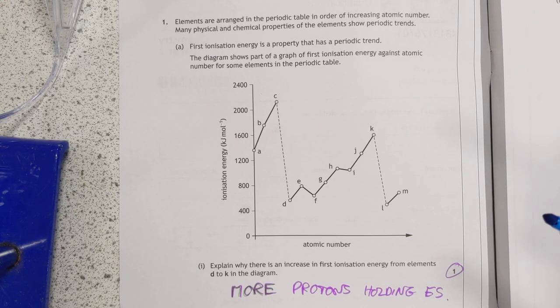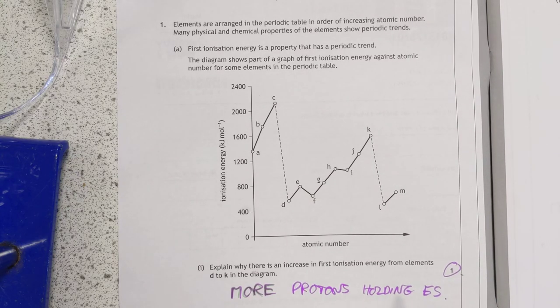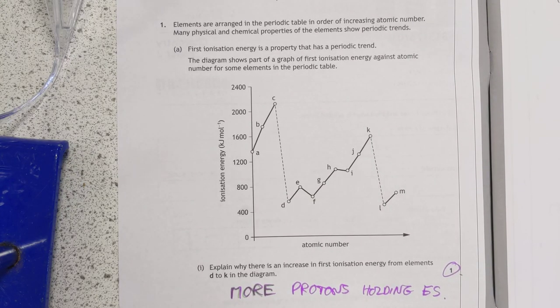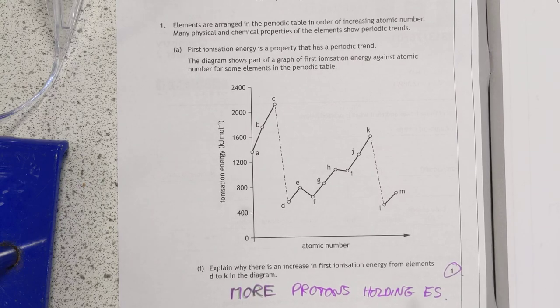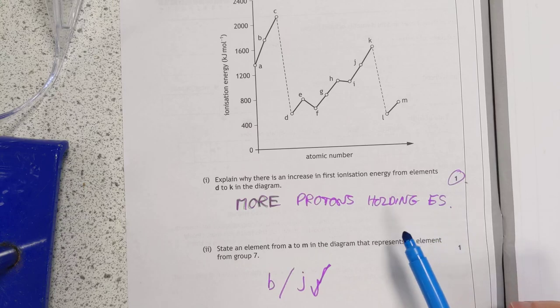Ionization energy. We're opening up with this. A graph of ionization energy. Explain why there's an increase in the first ionization energy from elements D to K. Only worth one mark, so I'm going to guess, simple as saying more protons are in the atoms holding the electrons tighter. Would they accept slight decrease in atomic radius? Because that's true as well.